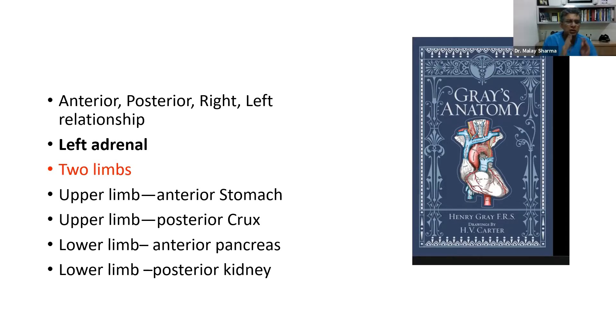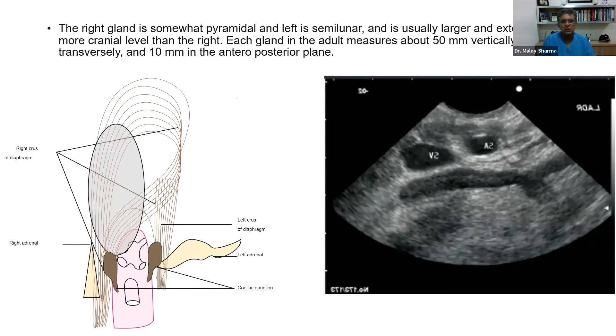These are the important anatomy books and atlases which you should be having because it is within these books you will find the relations - what is anterior, what is posterior, what is right and left. For example, a simple relation of left adrenal gland. These are the core relationships of the two limbs of the adrenal gland, and in no book except for Gray's Anatomy will you find it simplified in such a simple manner.